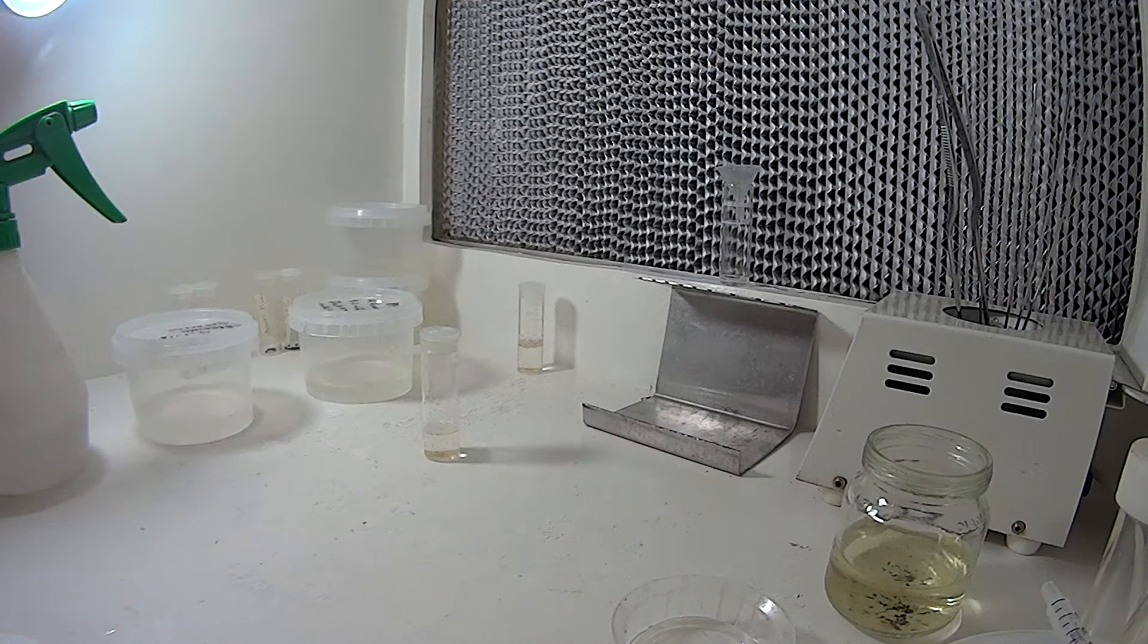Basically, it's 2 mls of plant preservative mixture added to 50 mls of your media. Now the media is before you add anything, so apart from the MS salt, so it's basically water and MS salt - no sugar, no agar, no gelrite, anything like that.